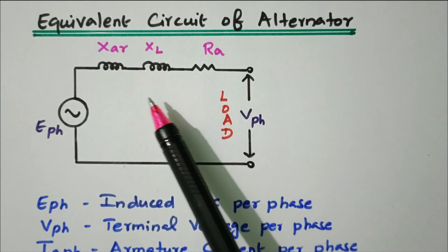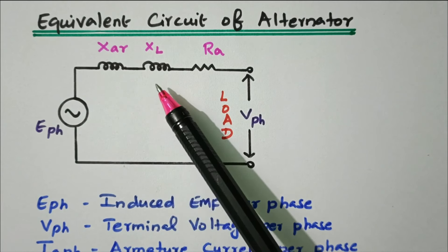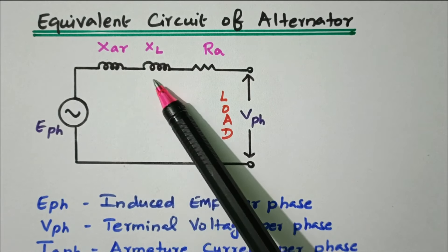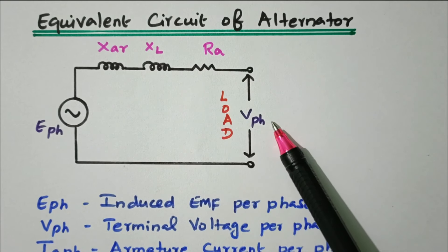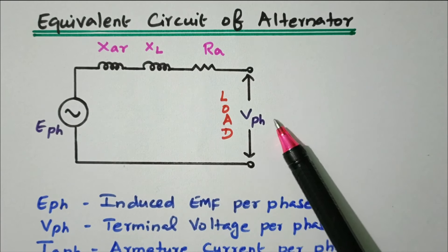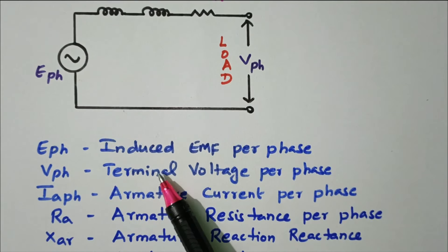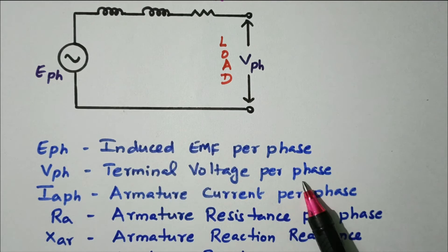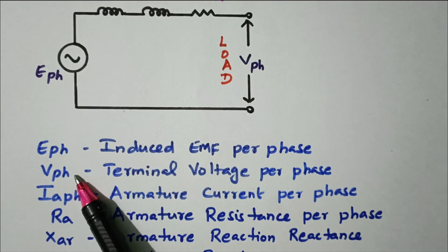Similarly, XAR is the armature reaction reactance drop, and XL is the leakage reactance — also a reactive drop. After the reactive drop and resistance drop, the remaining voltage is available across the load. So this is the equivalent circuit. We'll see each term one by one. E-phase is the induced EMF per phase; V-phase is the terminal voltage per phase.